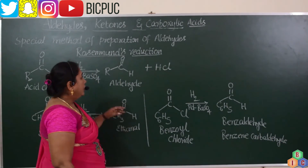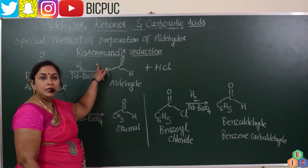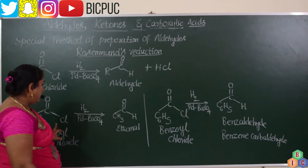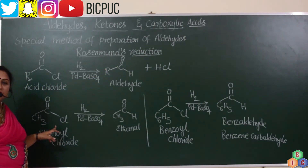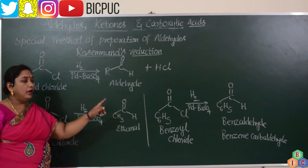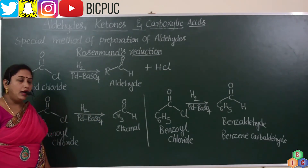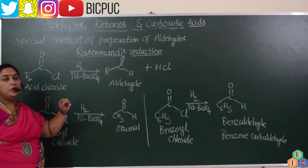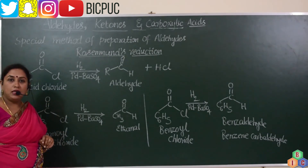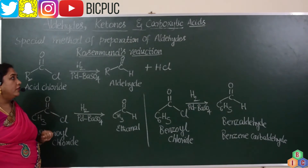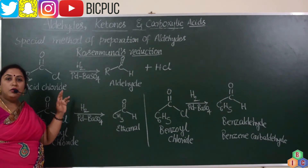By making use of Rosenmund's Reduction, we are able to obtain both alkyl aldehydes as well as aryl aldehydes. The palladium supported over barium sulphate catalyst is also referred to by the name Rosenmund's catalyst.